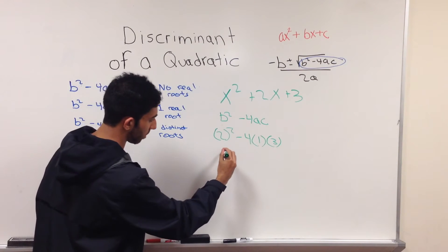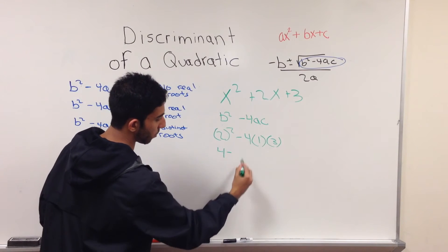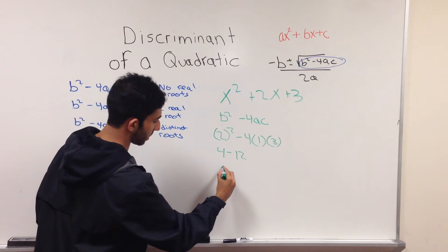2² is 4, minus 4 times 3, which is 12. 4 minus 12 is negative 8.